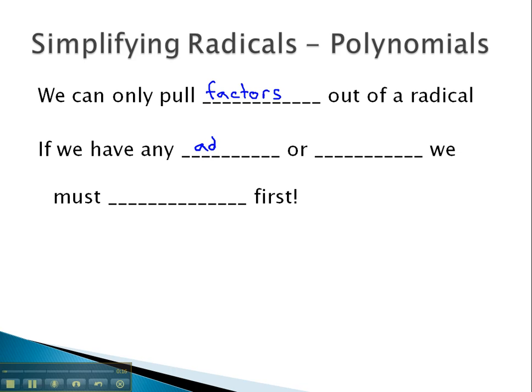This means if we have any adding or subtracting inside the radical, we don't have factors, but instead we have terms. And terms can't come out of a radical. This means we must find those factors that could come out by factoring first.